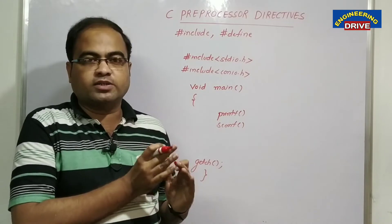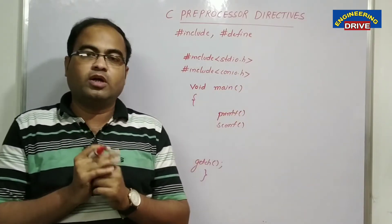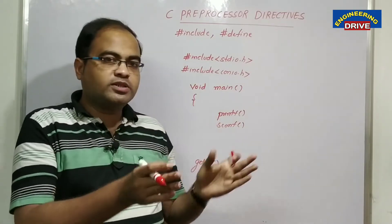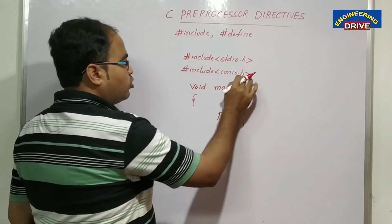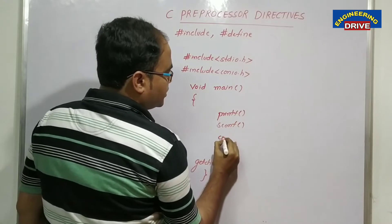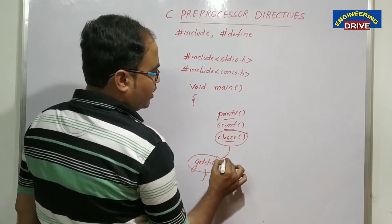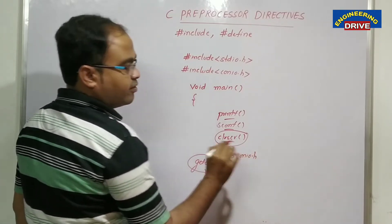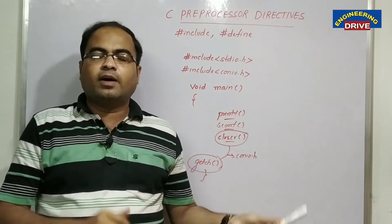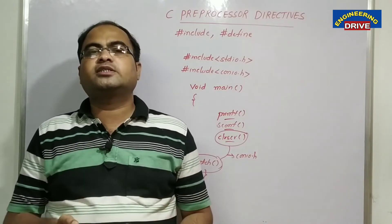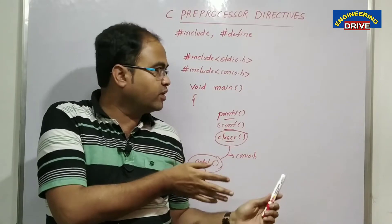Similarly, hash include less-than conio.h. Conio stands for console input output. Console refers to monitor or display or screen, which means you are telling the C compiler to include all the functions present in conio.h header file. Best examples are clrscr function and getch function. If you miss these two header files in your editor, you are not informing the compiler that you are going to use these functions, so there is a chance you may get warnings or errors.